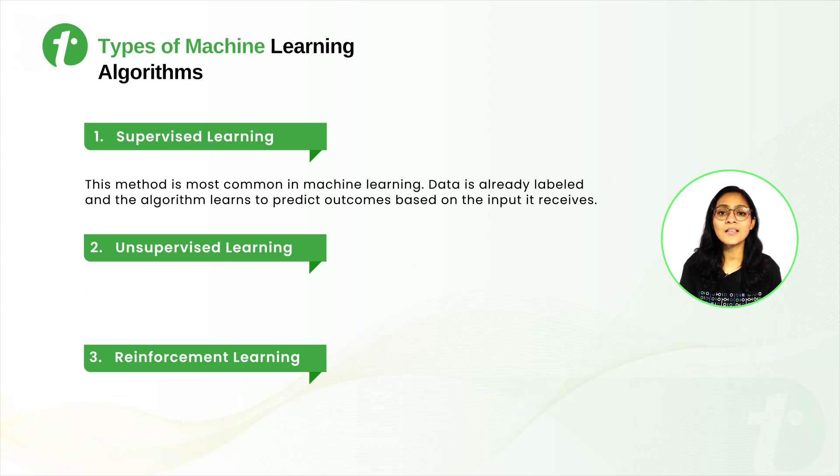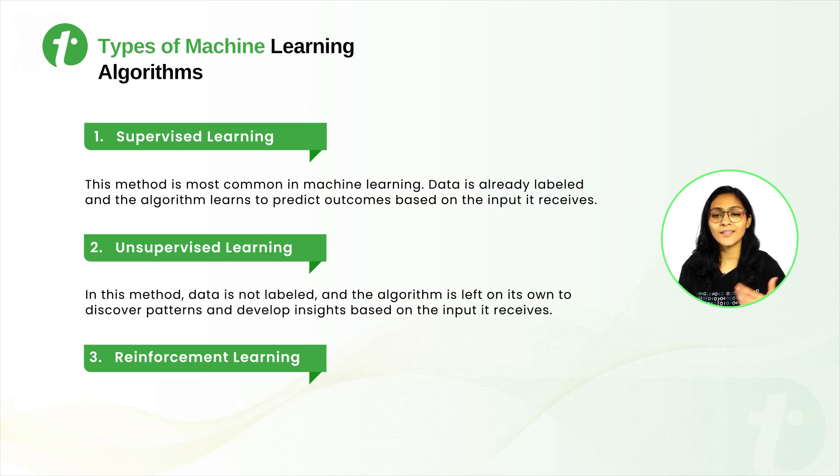The second one is Unsupervised Learning. In unsupervised learning, we provide the data to the model but that is unlabeled. The model itself interprets some hidden patterns or insights from the unlabeled data.